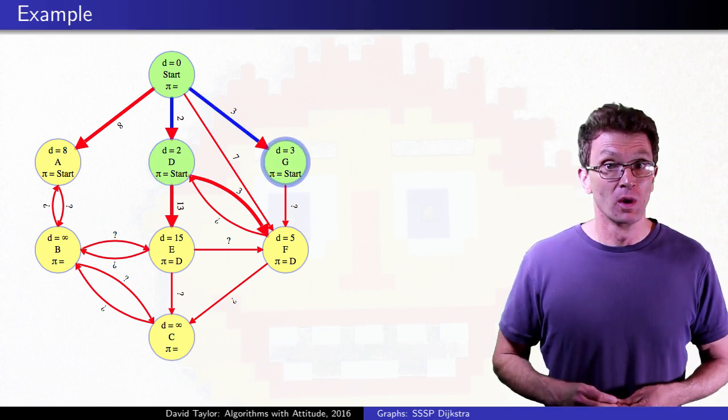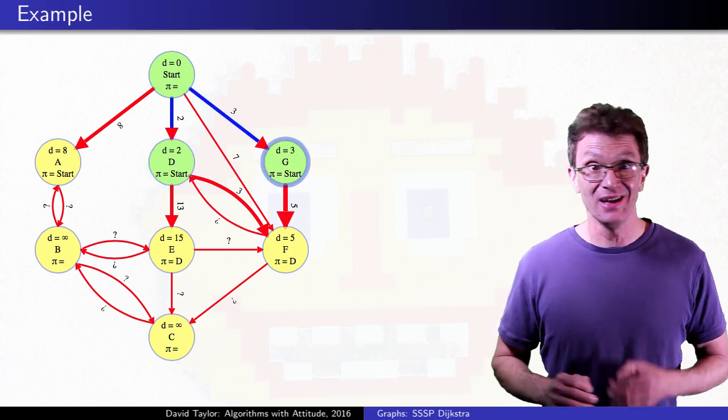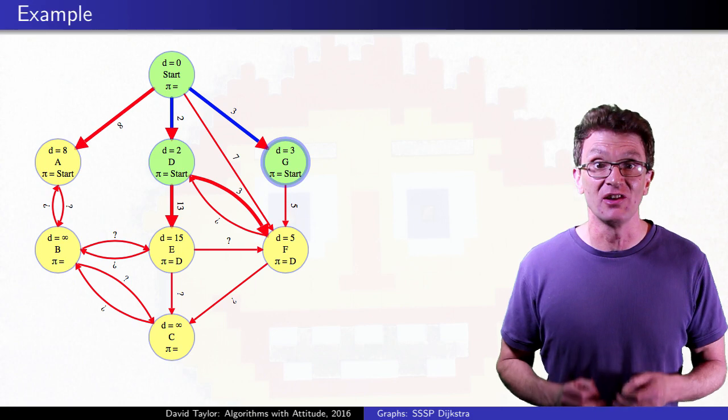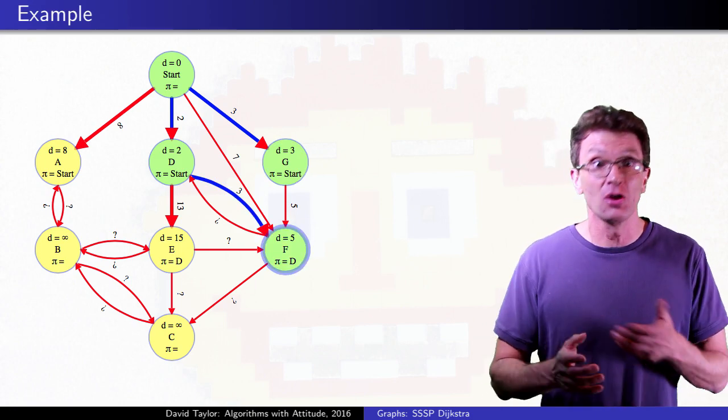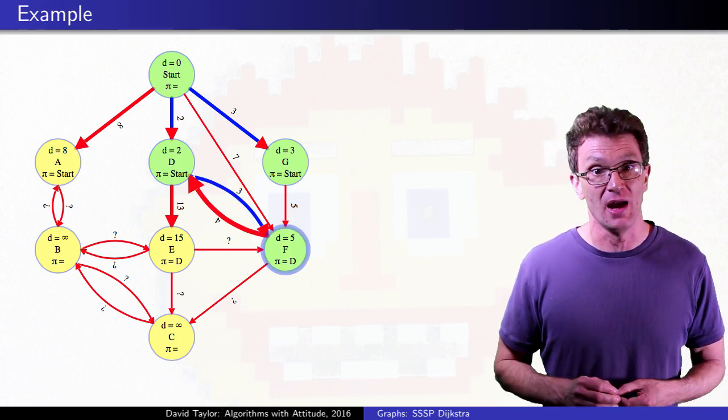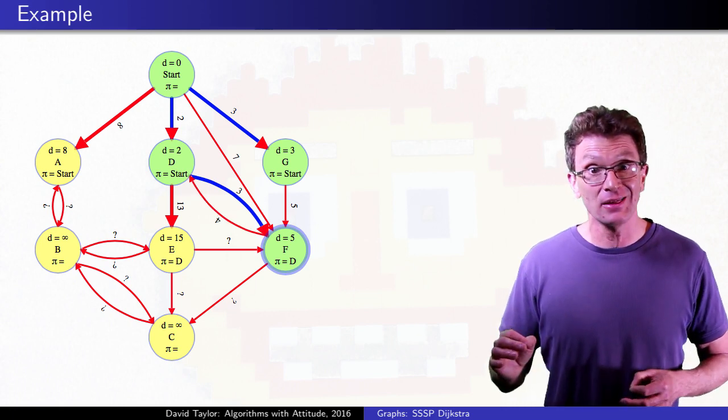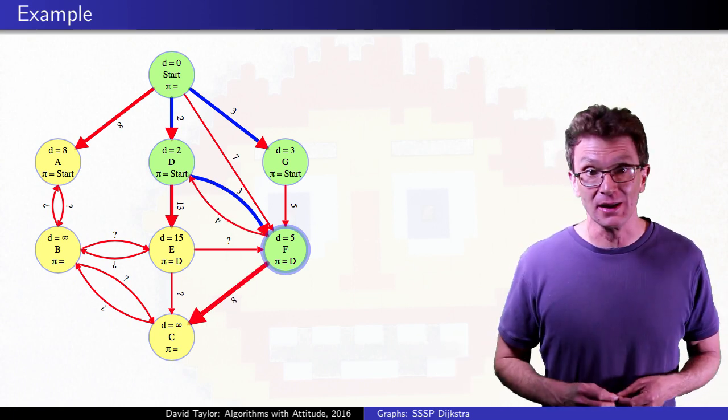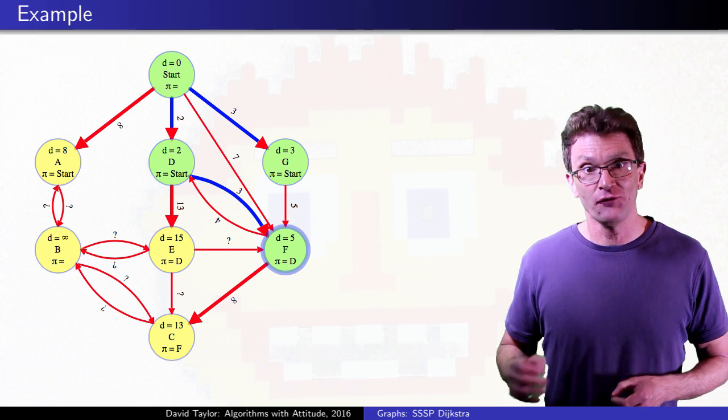Next comes G. When we relax its outgoing edge, it doesn't happen to change the distance estimate to F, but F is the next closest vertex anyway, it's closer than A, even though the path to A has only one link.